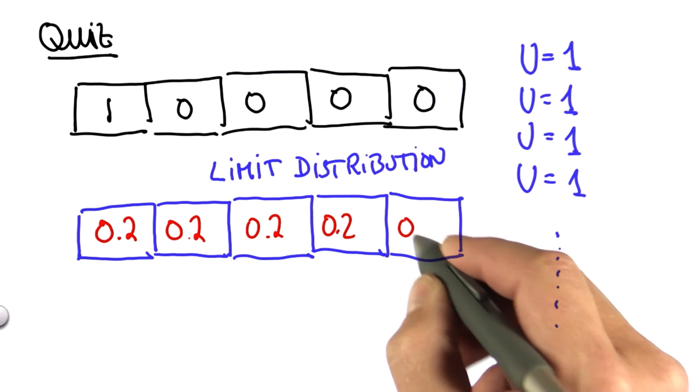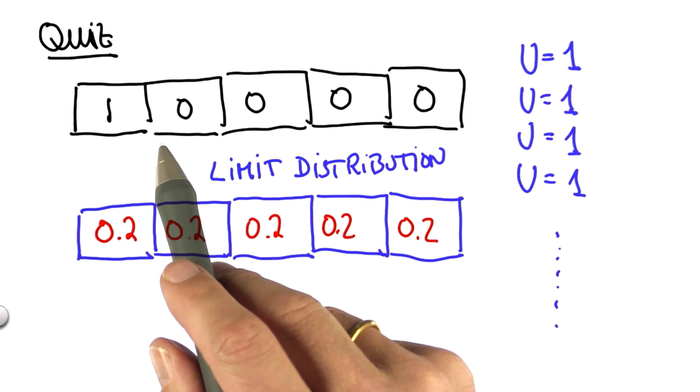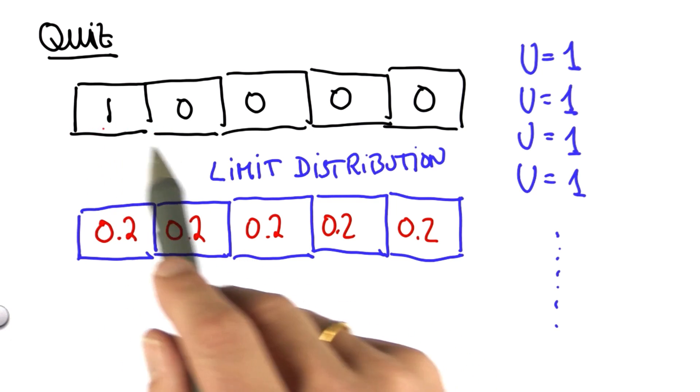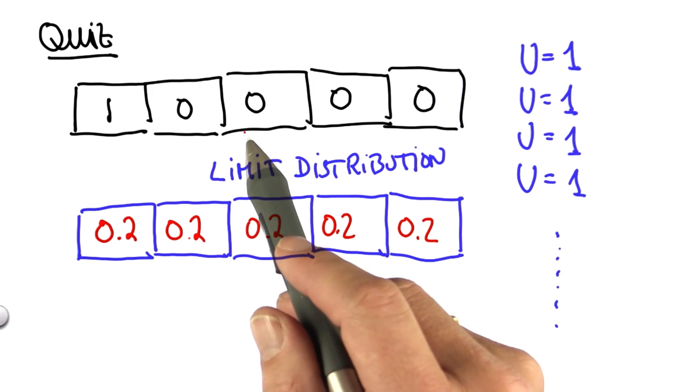Every time we move, we lose information. That is, in the initial distribution, we know exactly where we are. One step in, we have a 0.8 chance. But the 0.8 will fall to something smaller as we move on, 0.64 and so on.